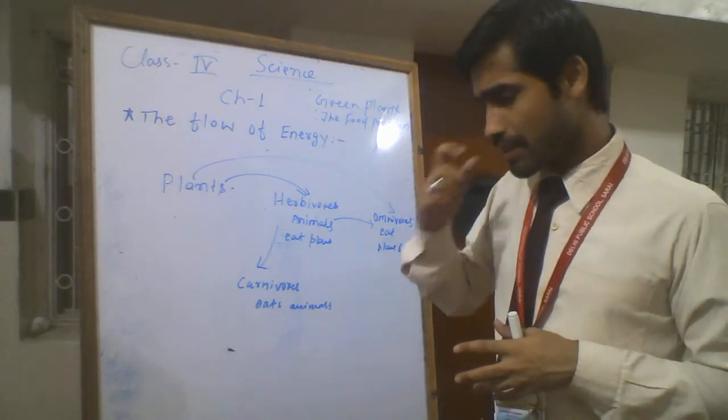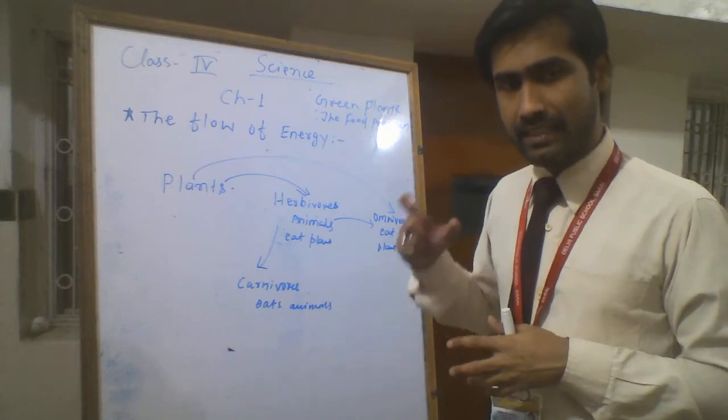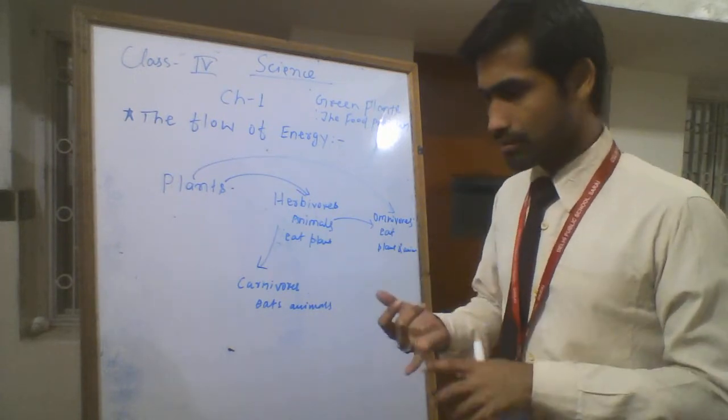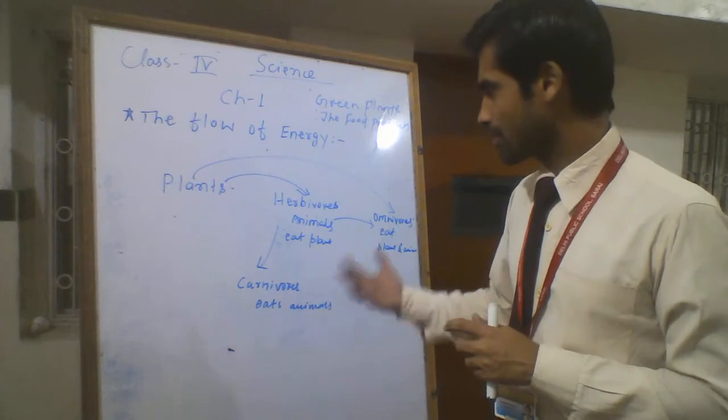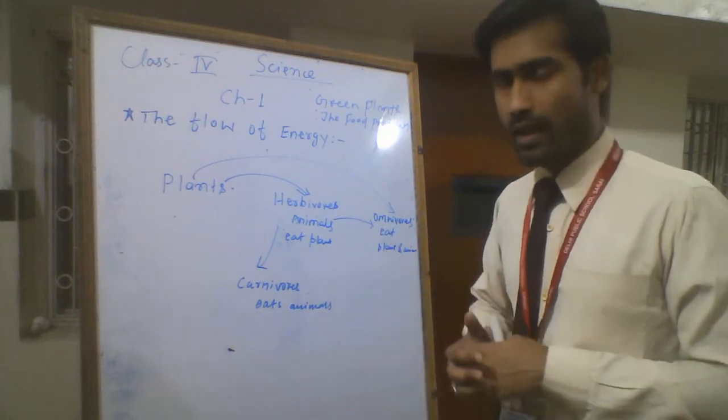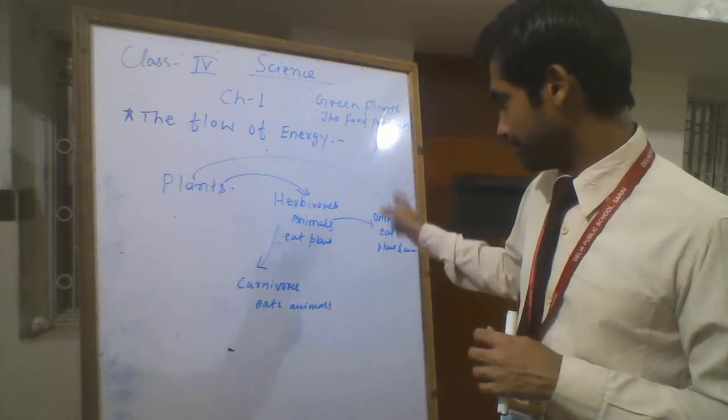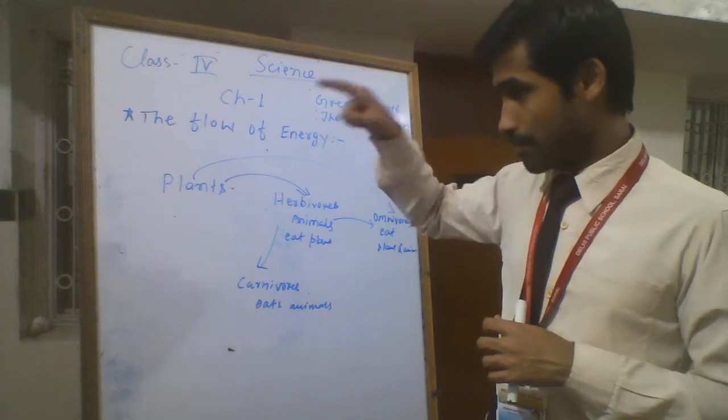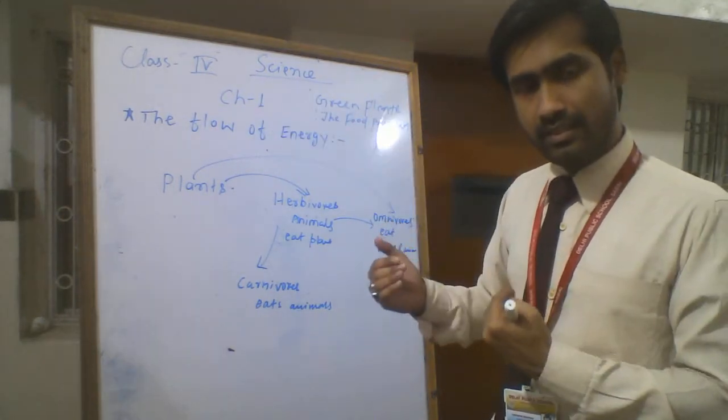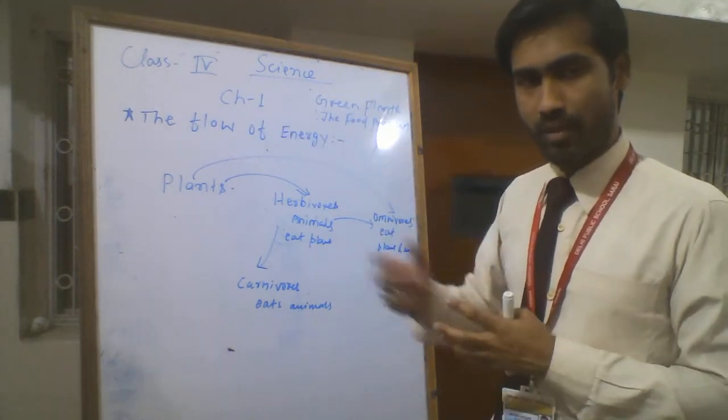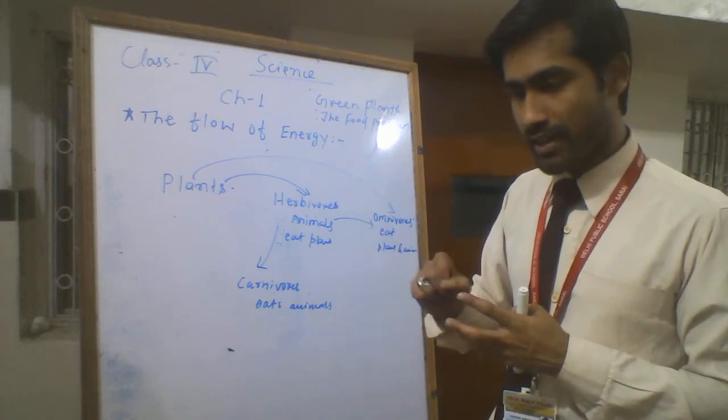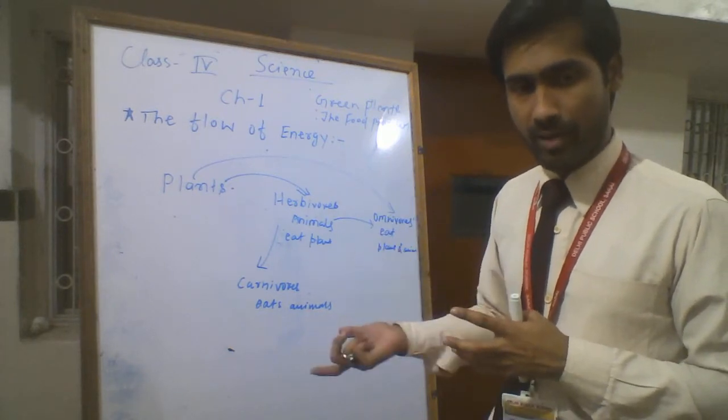Plants give us oxygen, food, and shelter to human beings and animals. Plants take carbon dioxide from our environment.